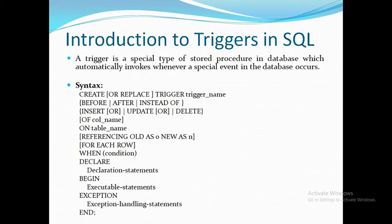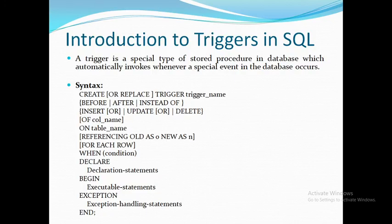Next is Triggers. A trigger is a special type of stored procedure which is stored in a database. Whenever you do some manipulation operation, if it violates some constraints, then it automatically generates an event and executes whatever action you have specified.